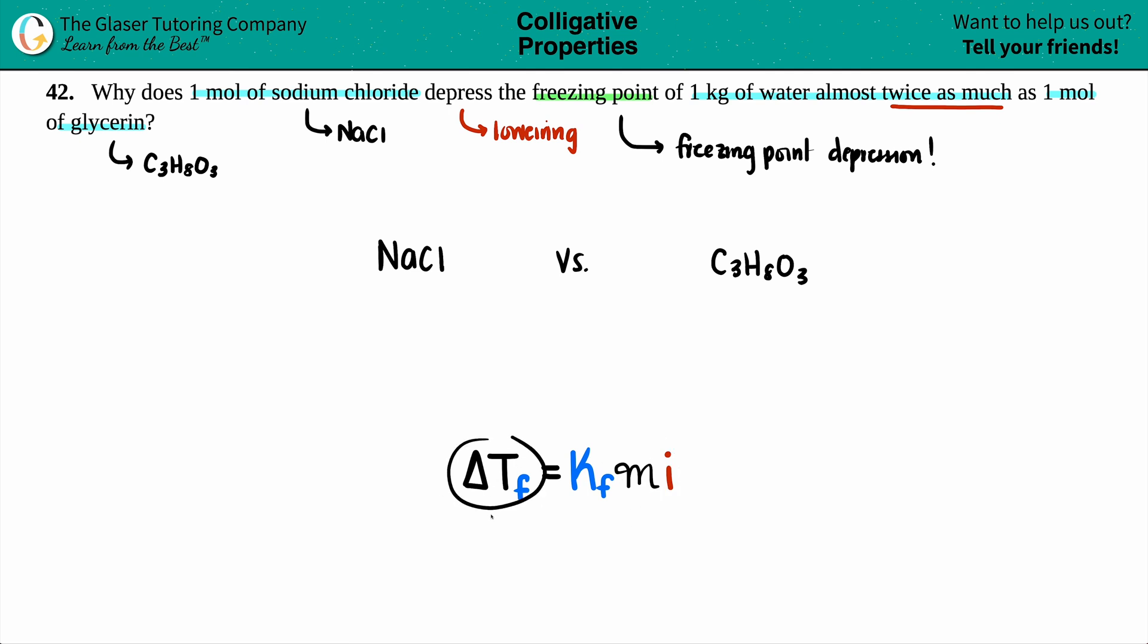Now the delta Tf is the change in the freezing point. And from the salt to the glycerin, there is going to be a difference in that change. The NaCl can change this value twice as much than the glycerin. So that means that something has to be on this side that is different between the two of them.